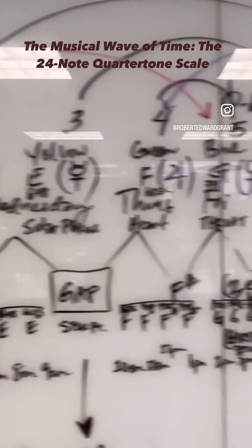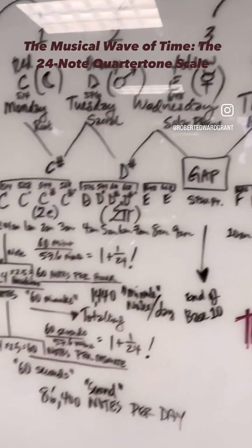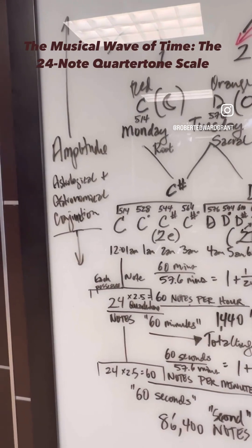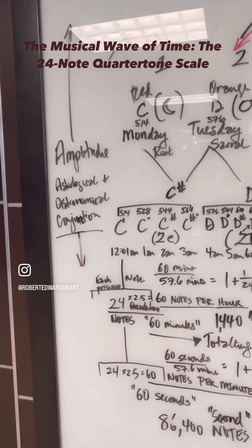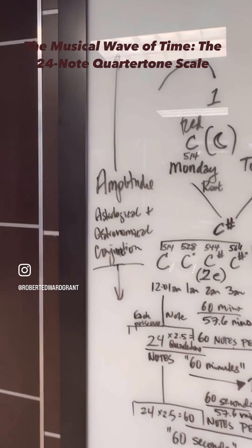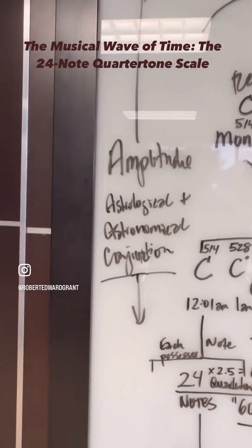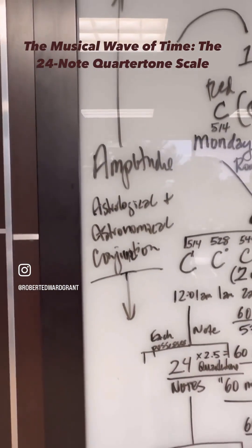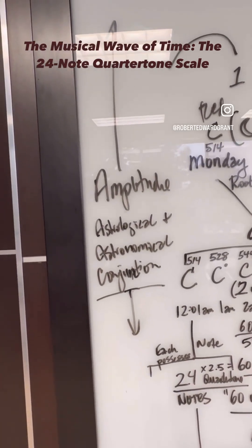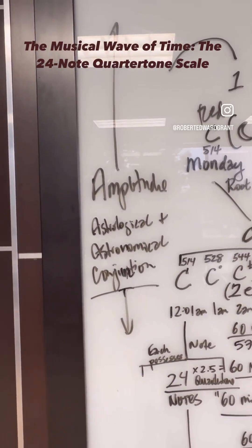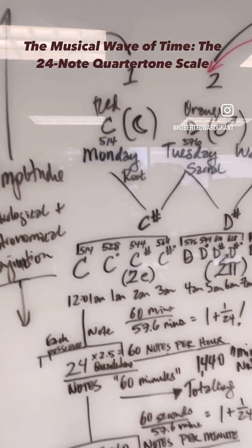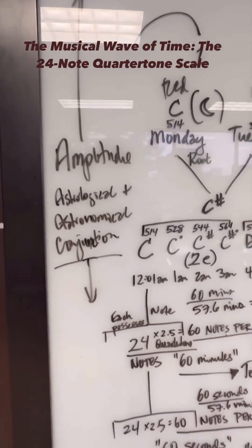Each of these becomes the wave of each week. Then you look at it and ask: what about the 60 minutes and the 60 seconds within each minute? What we're really looking at is an amplitude of astrological and astronomical conjunctions that form musical notes, and this also mirrors the prime number pattern.